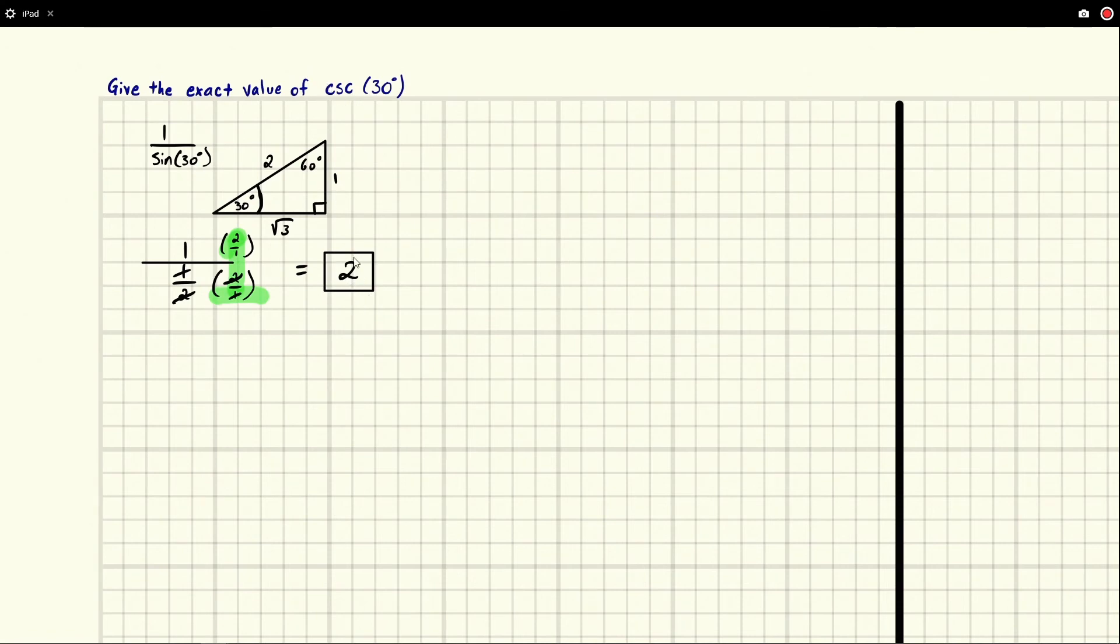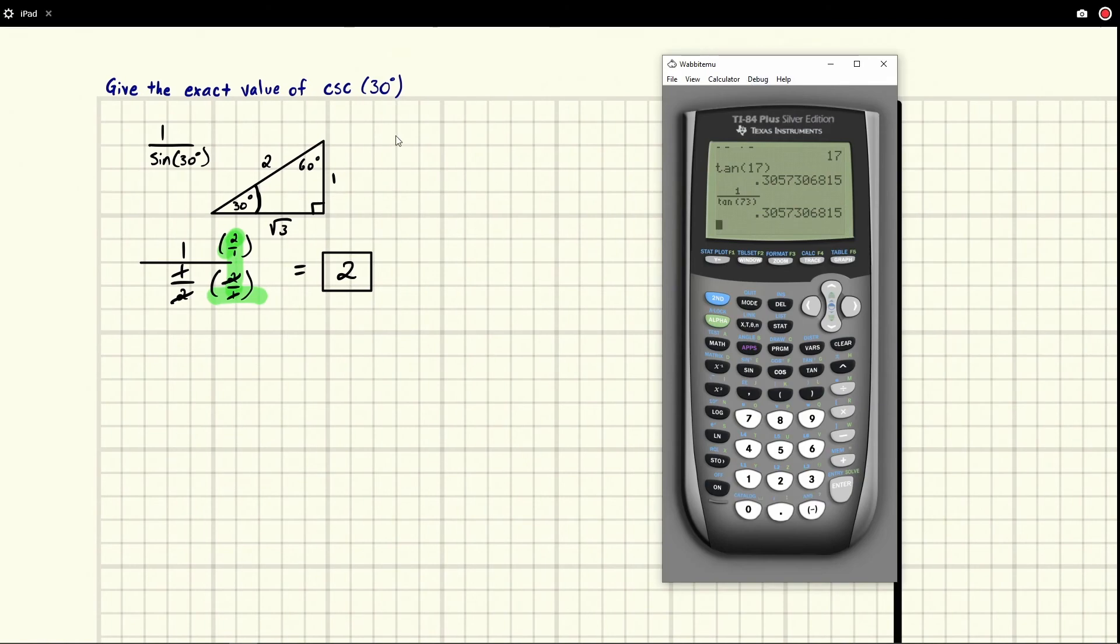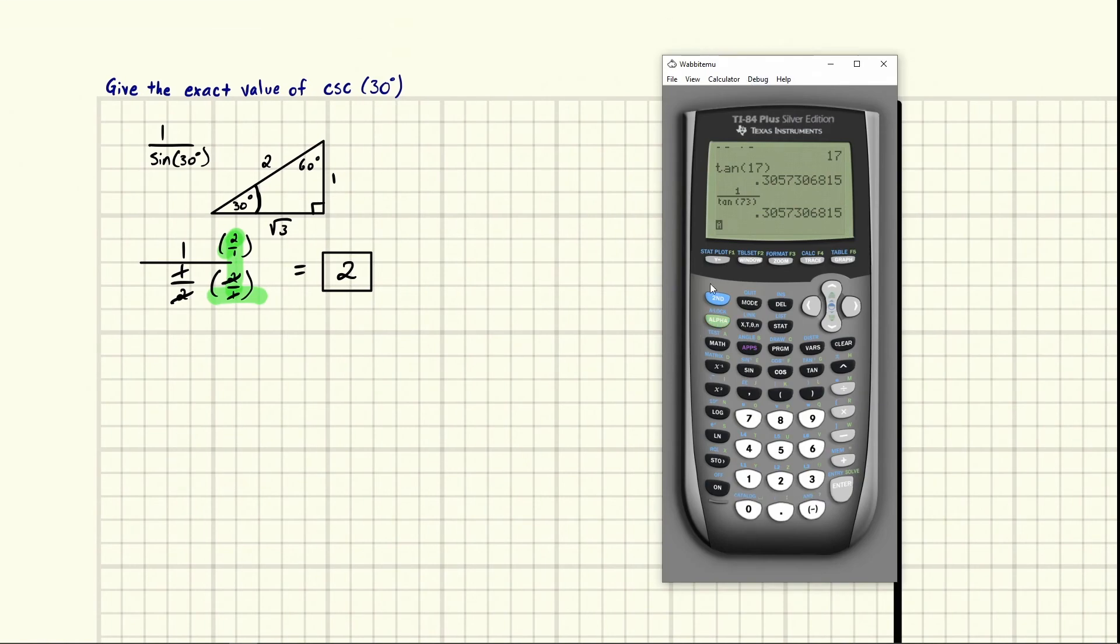We don't have a cosecant function but we could type the reciprocal function, 1 over sine of 30, and it will be the same thing. Also make sure your calculator is in degree mode before you do this. And we also get 2 here.